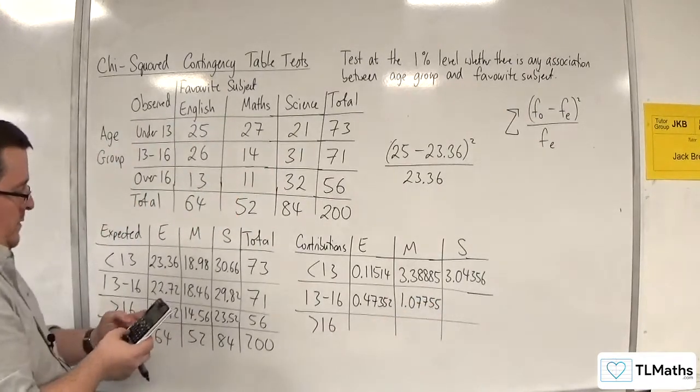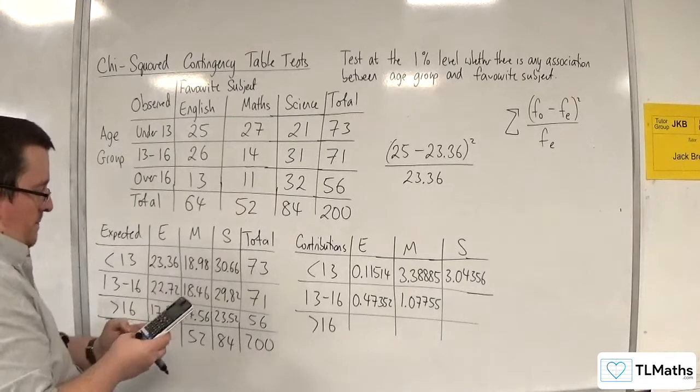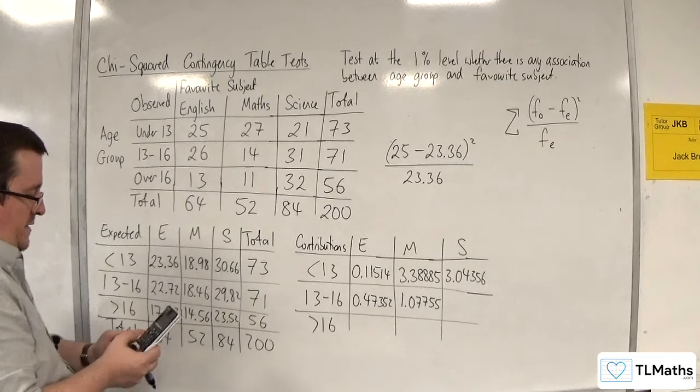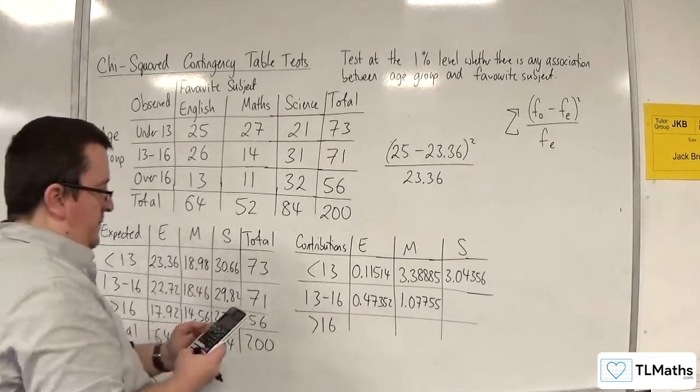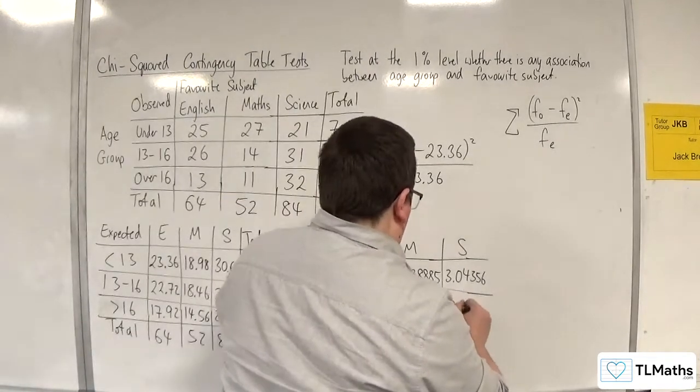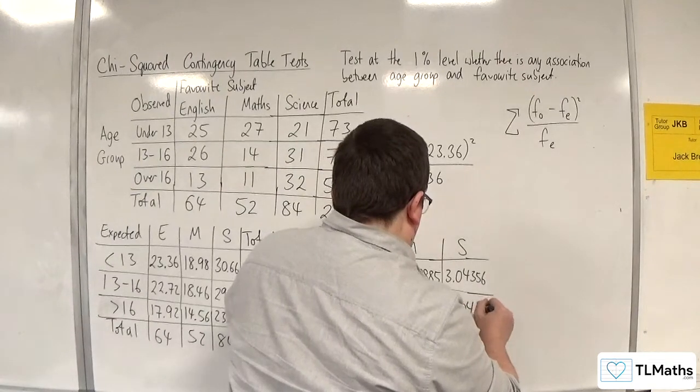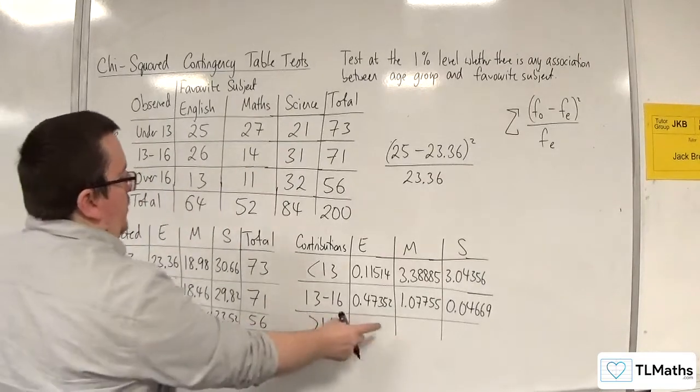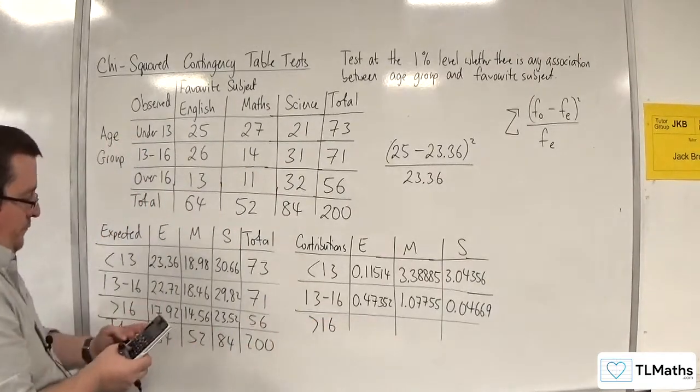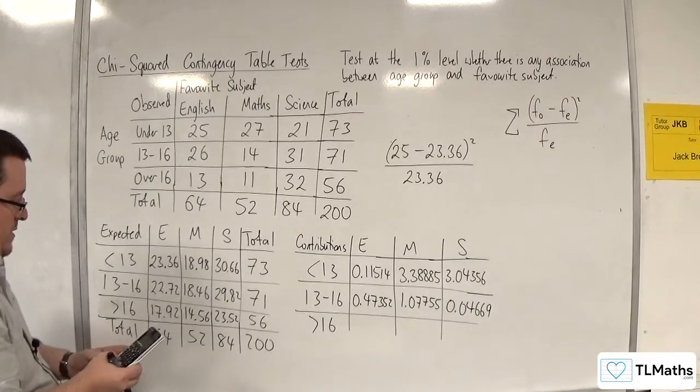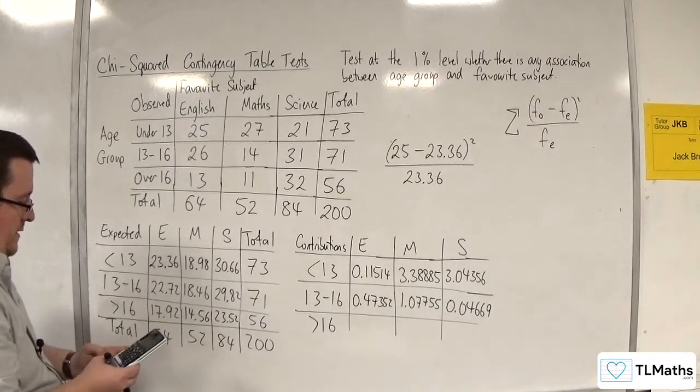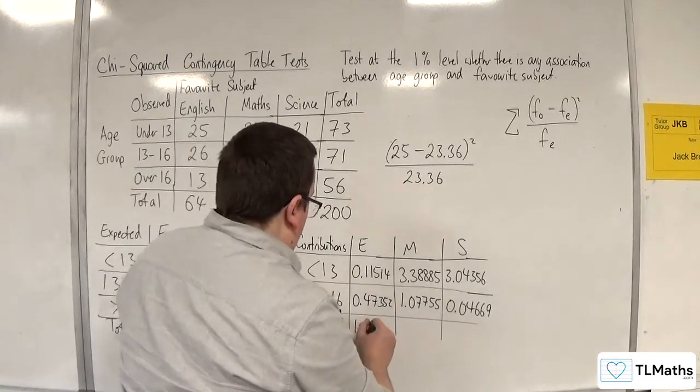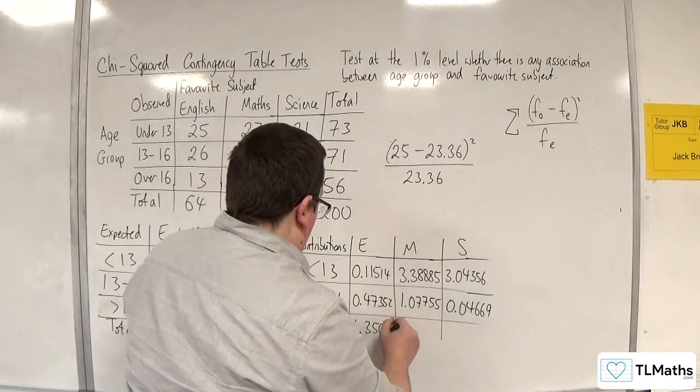This one next. We've got 31 take away 29.82, squared, divided by 29.82. So we get 1.35080.